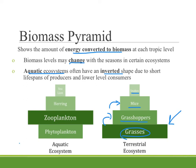In the aquatic ecosystem, we see a slightly inverted or diamond-shaped pyramid because the phytoplankton — the producers in this system — are very small and have short lifespans. So the amount of energy converted to biomass for those individual organisms is much smaller than that of the small organisms that eat the phytoplankton — the zooplankton — which live longer and are larger.